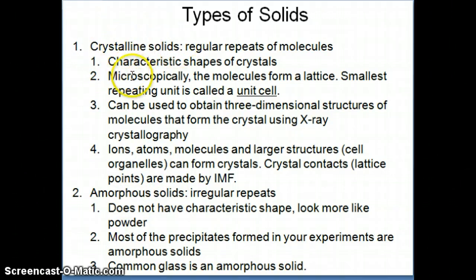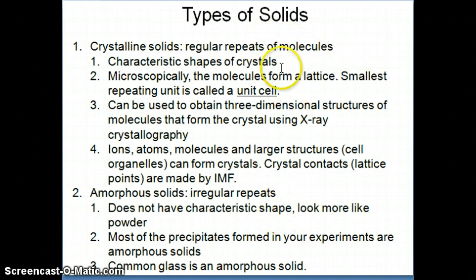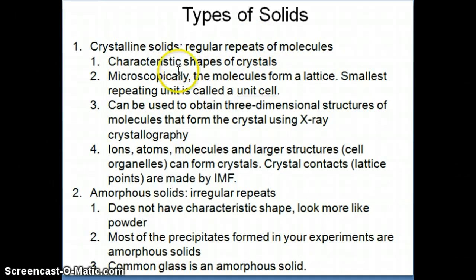Crystalline solids are a type of solid where the molecules inside make regular repeating patterns, like those you see in wallpaper. The pattern repeats again and again in one direction, the other direction, and front and back. As a result of those regular repeating patterns of the molecules, you get specific shapes — which is what we see as the crystal.